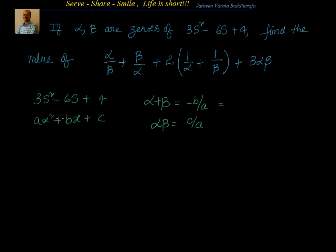What is -b/a? -(-6)/3 = 6/3 = 2. What is αβ? c/a = 4/3. Now we have α + β = 2 and αβ = 4/3.